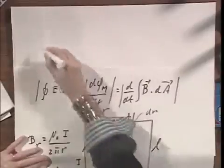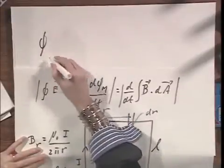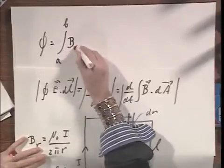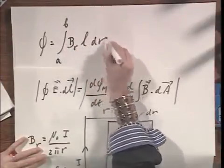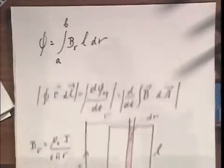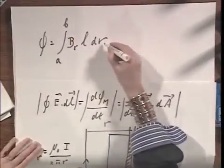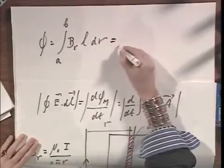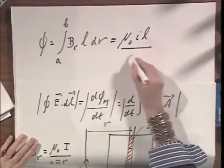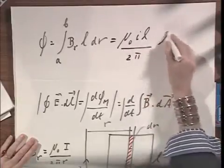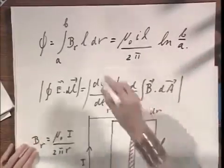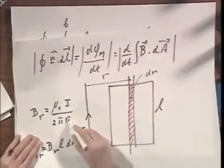And so, if I do an integral of the magnetic flux, then I have to do an integral all the way from A to B of that magnetic field, L dr, is the surface area. I integrate R from A to B. And what do I find? Mu zero times I times L divided by two pi times the logarithm of B over A. Because remember, Br is inversely proportional to R.